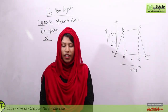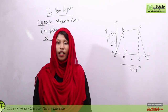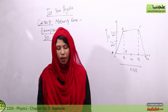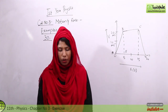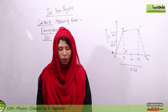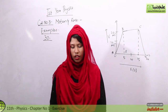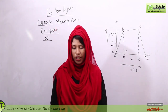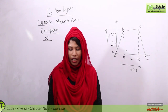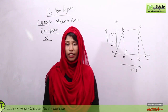Okay, students, now we will start taking Chapter Number 3 example question. Number 1 is 3.1. The velocity-time graph of a car moving on a straight road is shown in Figure 3.7. Describe the motion of the car and find the distance covered.